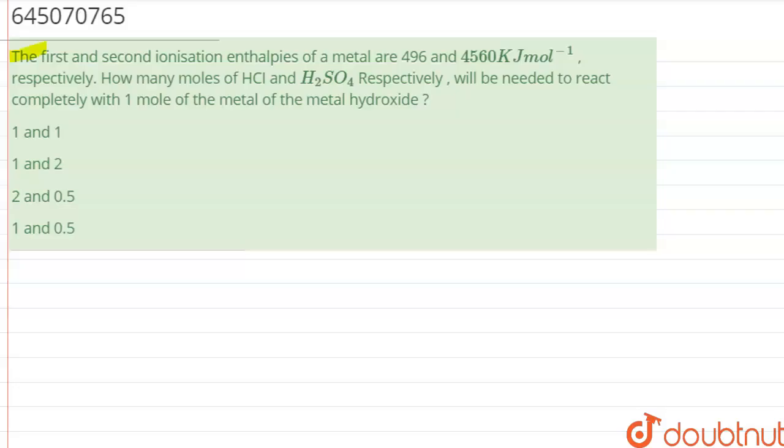Hello, in this question we have been given the first and second ionization enthalpy of a metal are 496 and 4560 kJ per mole respectively. How many moles of HCl and H2SO4 respectively will be needed to react with one mole of the metal hydroxide?